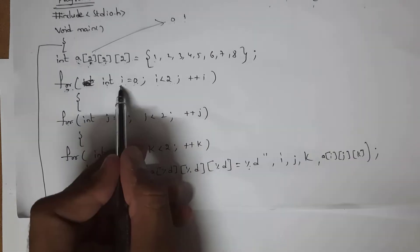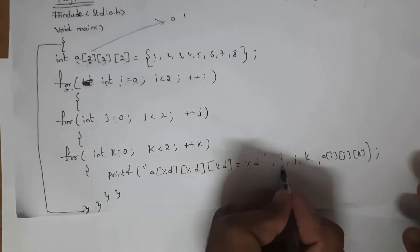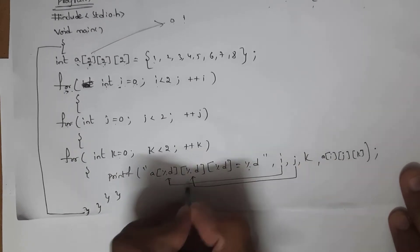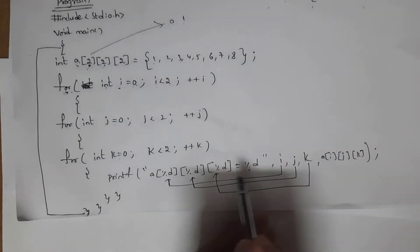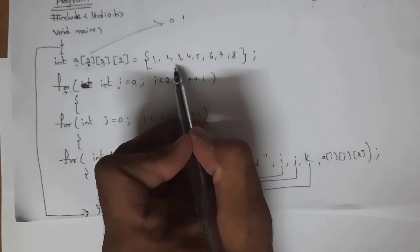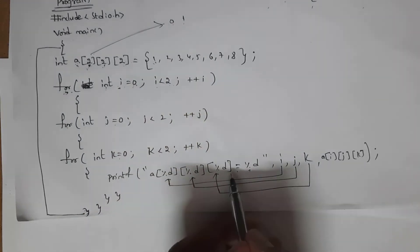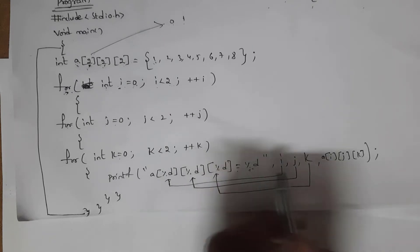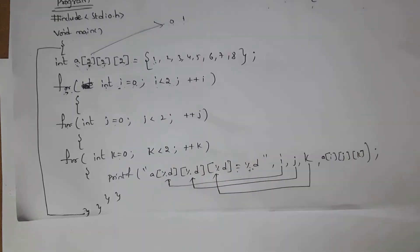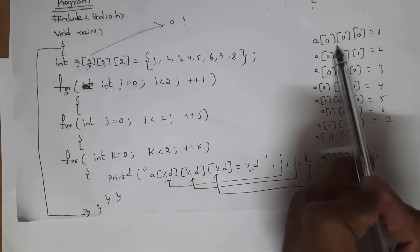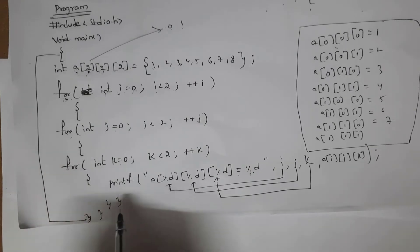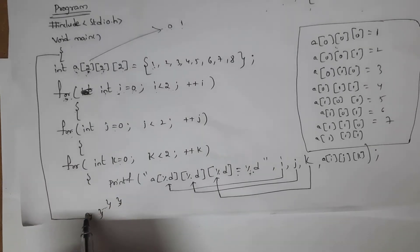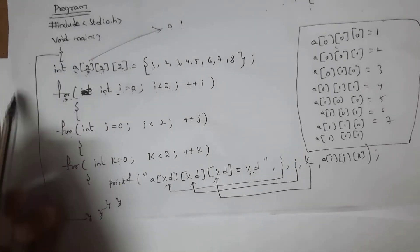The first dimension index is i, second dimension is j, and third dimension is k. The value is printed as a[i][j][k]. By writing this program I will get the output for this three-dimensional array. Since we opened three for loops, we need to close those three for loops. The last curly bracket is for void main. This is how we write a three-dimensional array program.